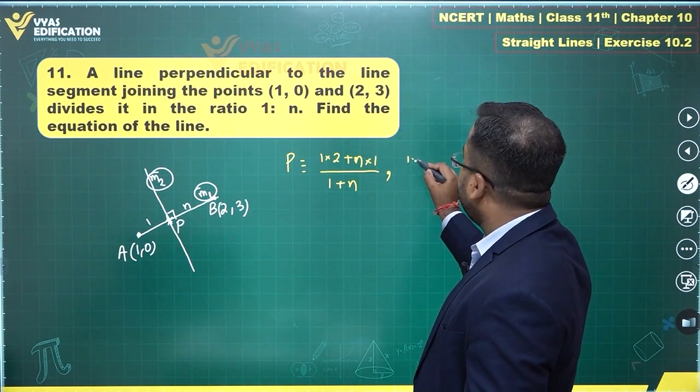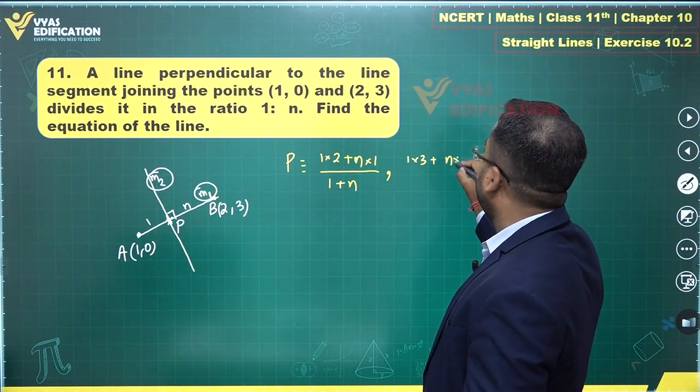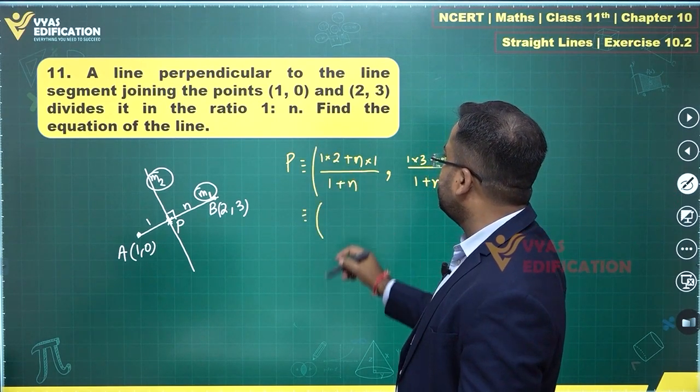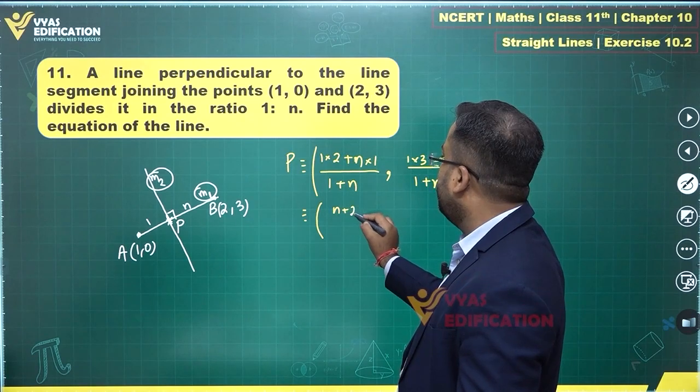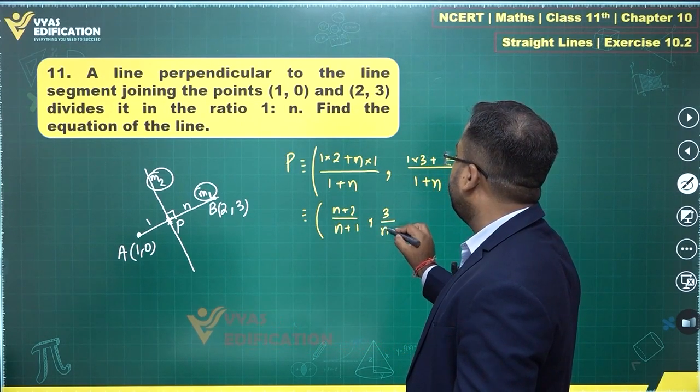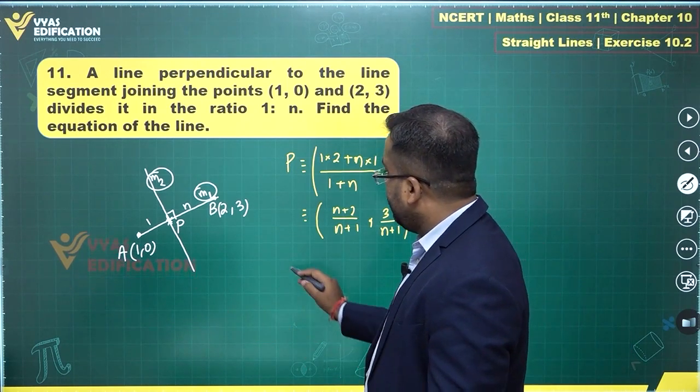Upon 1 plus n - the x and y coordinates of point P. What is that? (n+2)/(n+1), 3/(n+1) - coordinates of point P. Can you also find the slope m1?